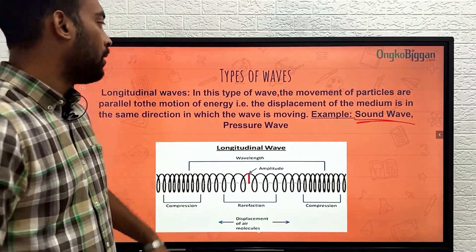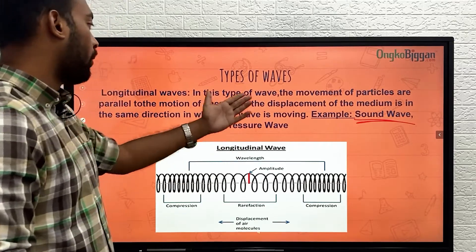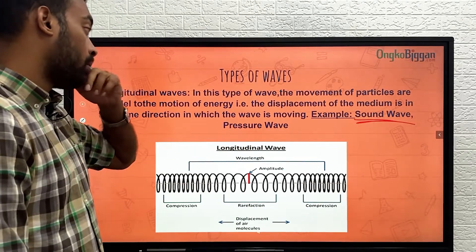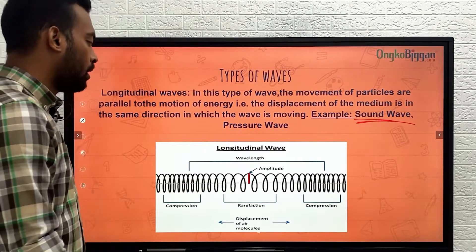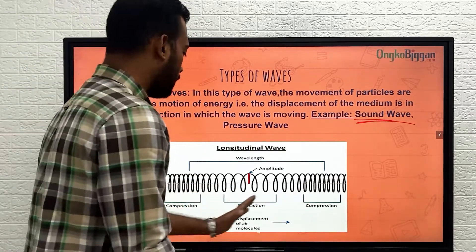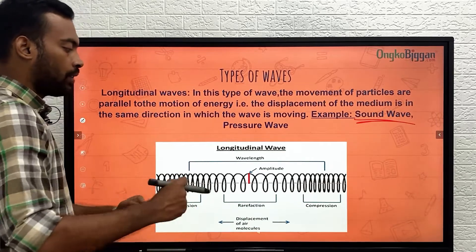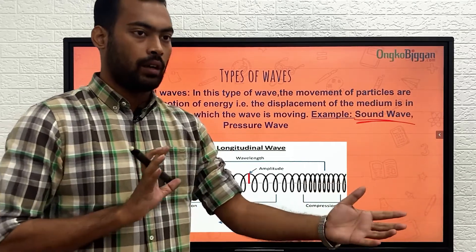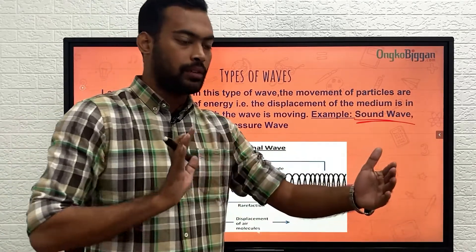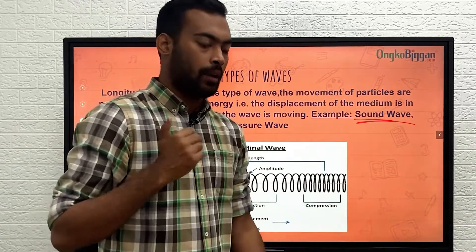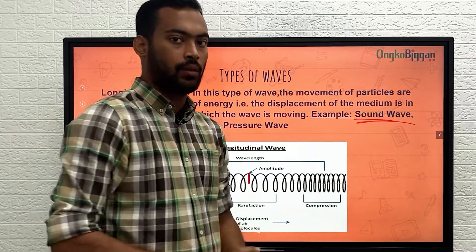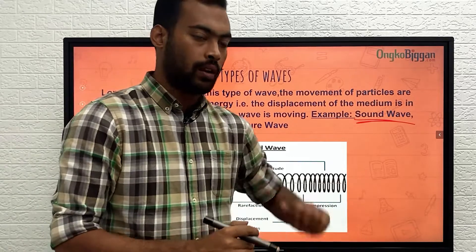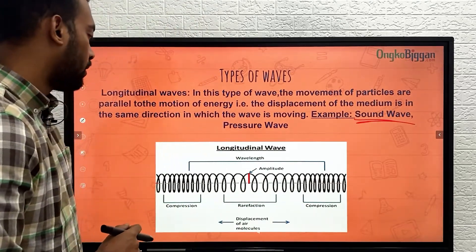That kind of wave — where the displacement of the medium is in the same direction in which the wave is moving — is called a longitudinal wave. Another example: suppose you have a spring and you are compressing it. You are putting energy in a certain direction, and in that direction the energy is working, creating a wave of energy. That is a longitudinal wave.